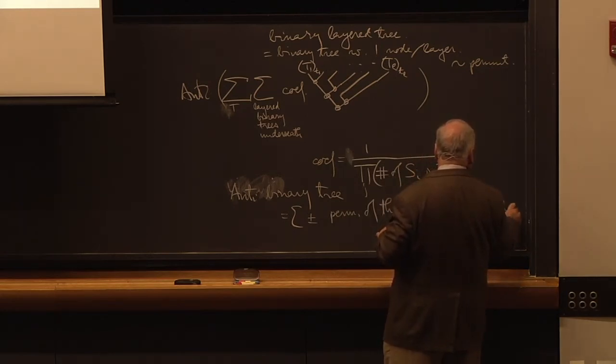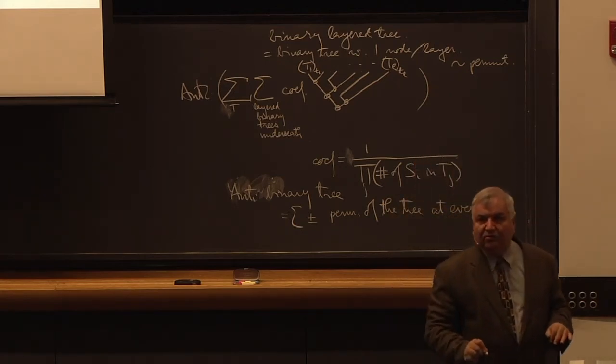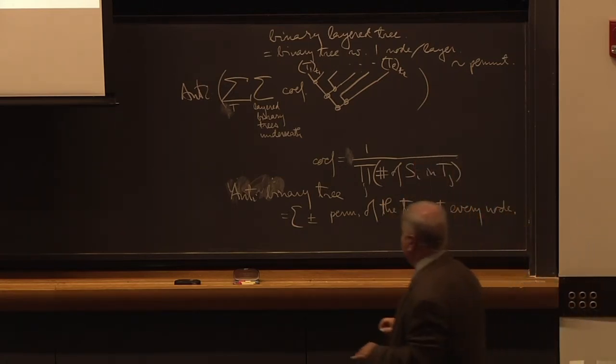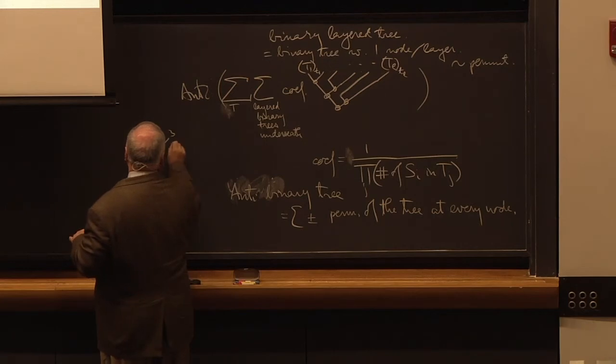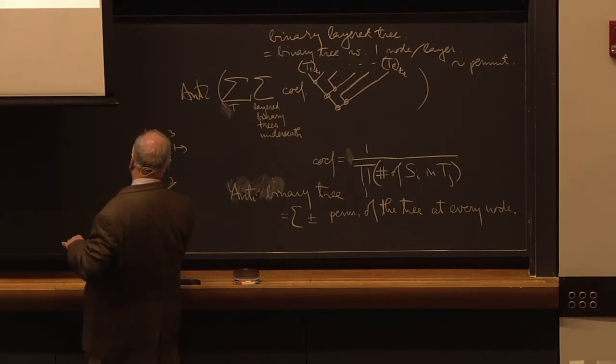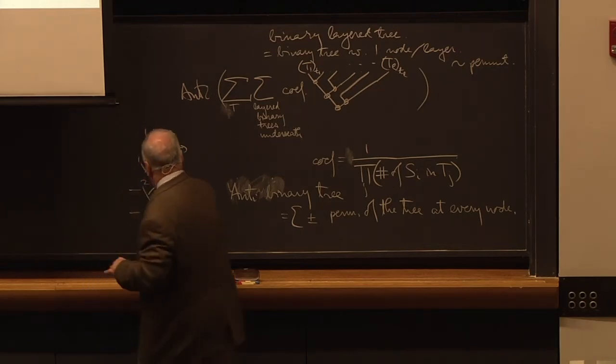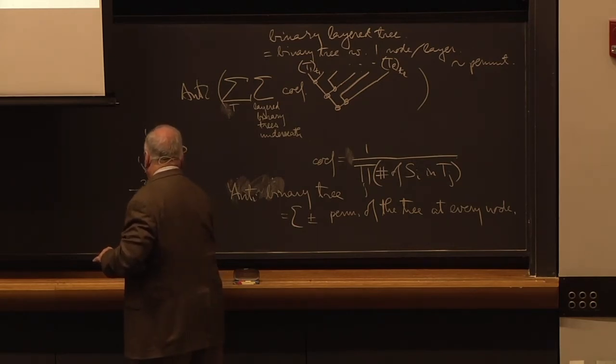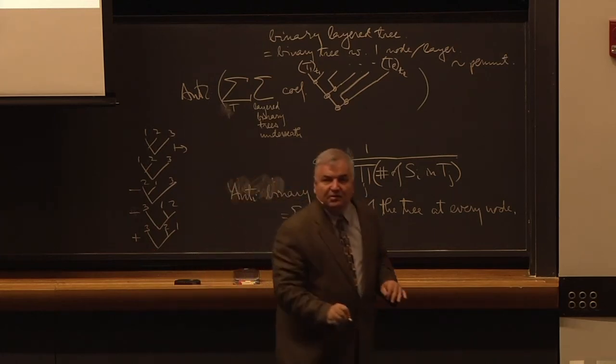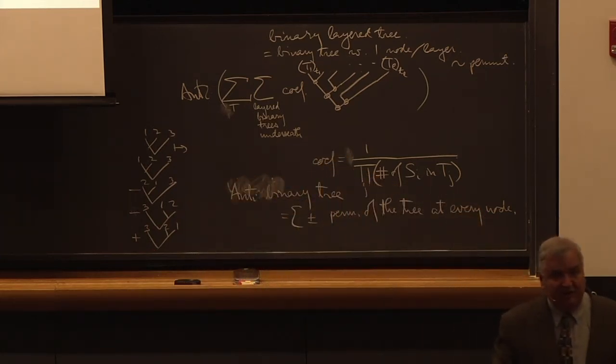So in order to do this we take yes the expression we anti symmetrize so let's put here anti of this and the anti symmetrize the anti symmetrization of binary tree is a sum with signs of the permutations of the tree at every node.